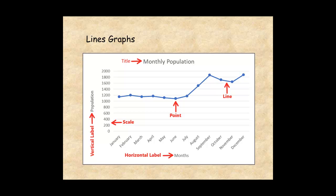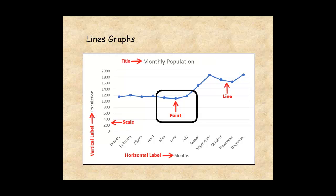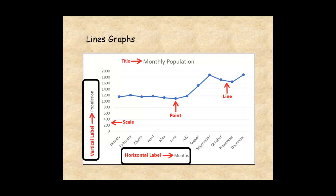A line graph has five main features: title, scale, points, labels, and a line.